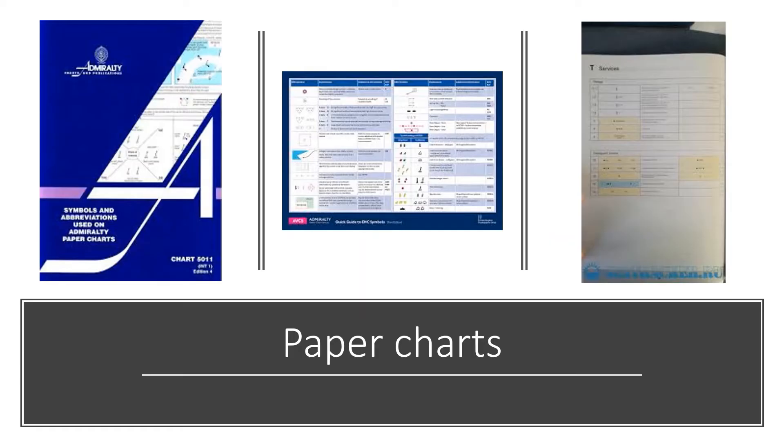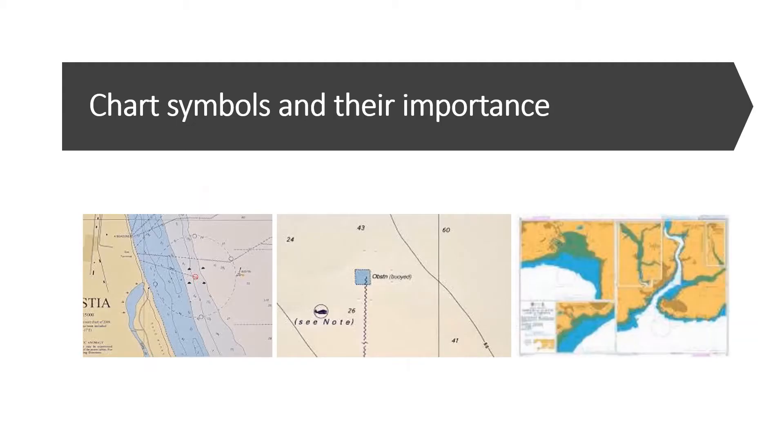But with the electronic navigation charts that are available on ECDIS, the system is much better. You don't have to draw anything manually. You just have to go and find the symbols and then include it in a defined position in your electronic navigation chart. You can also delete it digitally. The system is much easier, much faster.